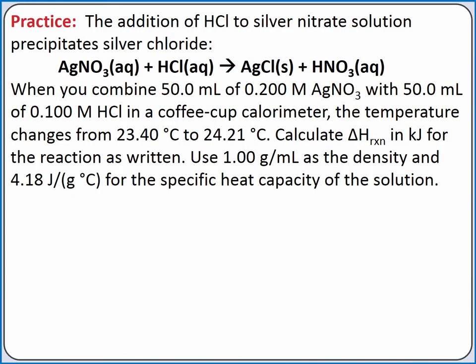Let's practice finding the enthalpy of reaction from a coffee cup calorimeter experiment. The addition of HCl to silver nitrate solution precipitates silver chloride. When you combine 50 milliliters of 0.2 molar silver nitrate with 50 milliliters of 0.1 molar HCl in a coffee cup calorimeter, the temperature changes from 23.4 degrees Celsius to 24.21 degrees Celsius. Calculate the change in enthalpy in kilojoules for the reaction as written. Use 1 gram per milliliter as the density and 4.18 joules per gram degree Celsius for the specific heat capacity of the solution.